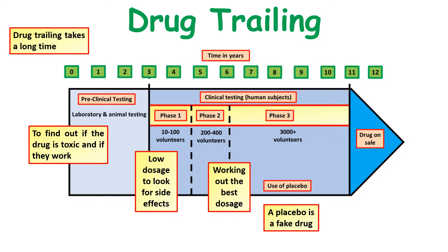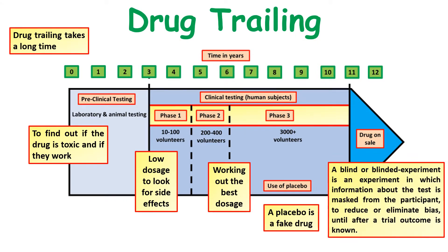Phase three involves 3,000 plus volunteers and involves giving half of them a placebo - a fake drug that is not going to have any medical effects. During the phase three trial, a blind or double-blind experiment is used. This is an experiment in which information about the test is masked - hidden from the patient - to reduce or eliminate bias. Nobody knows whether they've been given a real drug until after the trial. After this, the drugs can then go on sale, but they will still be monitored for a few years.